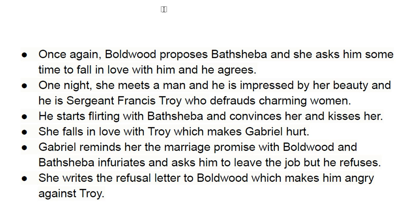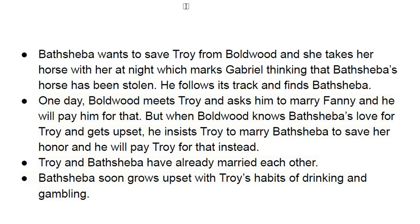Gabriel reminds her of the marriage proposal with Boldwood and Bathsheba becomes infuriated and asks him to leave the job, but he refuses. She writes the refusal letter to Boldwood, which makes him angry about Troy. Bathsheba wants to save Troy from Boldwood and takes her horse at night, making Gabriel think the horse has been stolen. He follows its track and finds Bathsheba. Boldwood meets Troy and asks him to marry Fanny, offering to pay him. Later, Troy and Bathsheba had already married each other.